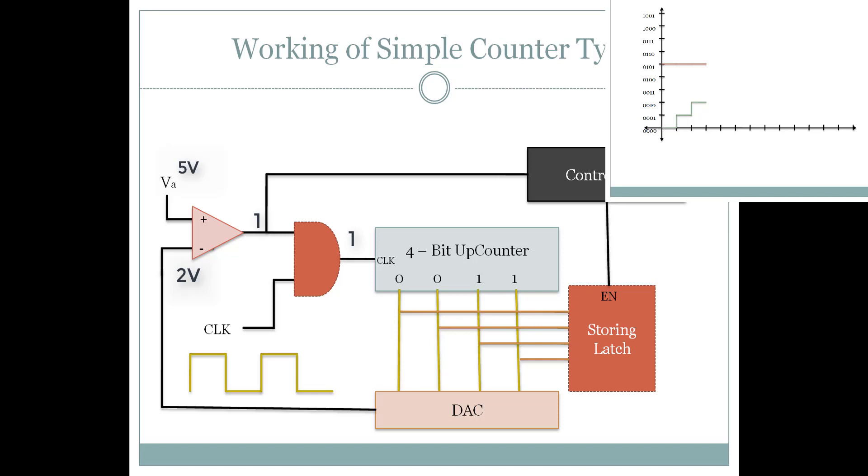The process continues until the counter output is 0, 0, 1, 0, 1. Once input and the reference voltage are equal, i.e. 5 volts, the comparator gives a logical 0.